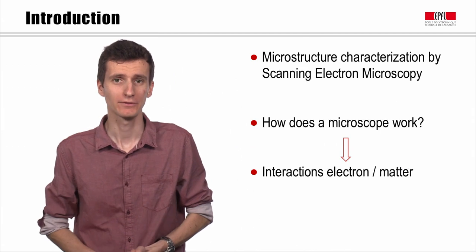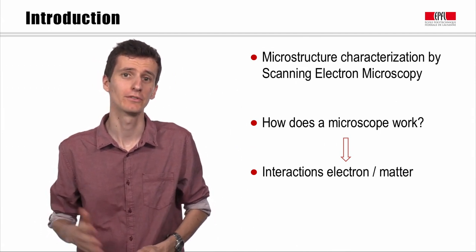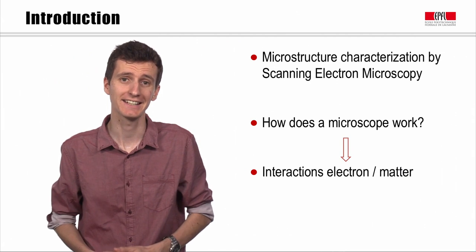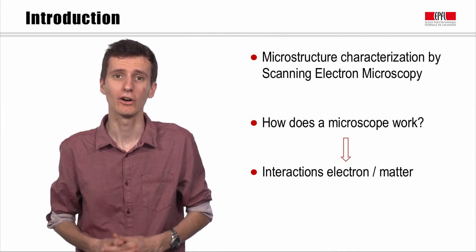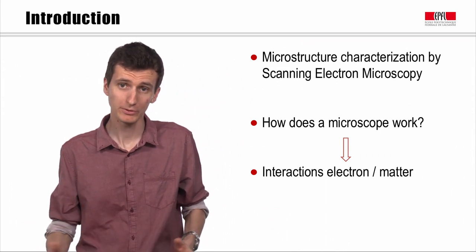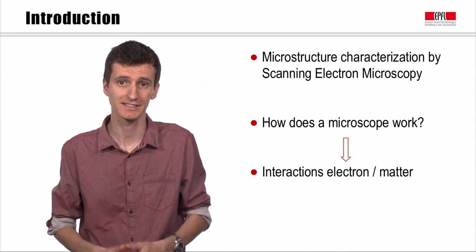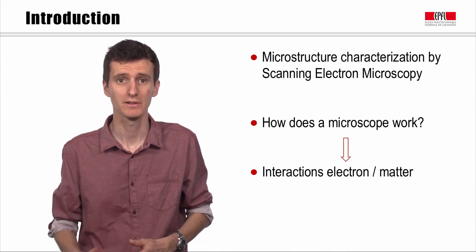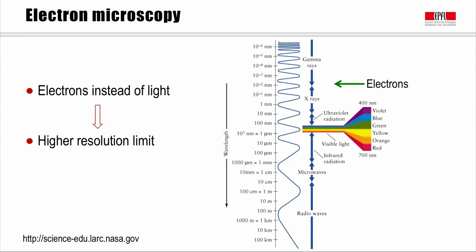Hello, my name is François Havet and I will show you in this MOOC the different information we can get using scanning electron microscopy for the characterization of the macrostructure of cementitious materials. We first need to understand how a microscope works and what happens when electrons are sent to a sample and hit the surface of the material. The first question we could ask is: why do we use electrons rather than visible light?